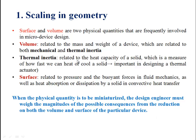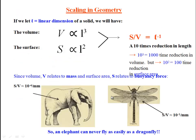We will consider L as the linear dimension of a solid. If L represents the linear dimension, then volume is L³ and surface area is L². A 10-times reduction in length means volume is reduced by 1000 times and surface area is reduced by 100 times. So surface-to-volume ratio is L²/L³, which equals L⁻¹ or 1/L.